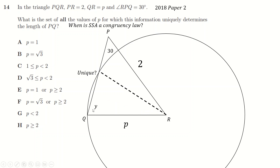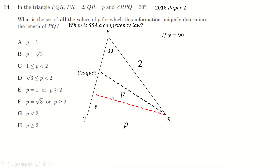So if this angle Y is 90 degrees, then P is uniquely defined — there's a special case where you get a right-angled triangle, and then 2 squared minus P squared must uniquely give you a single number. When P is drawn such that it meets the base at right angles, using the sine rule with the angle of 30 degrees, you end up with P equals 1. So P equals 1 is one way to get a unique triangle.